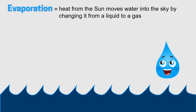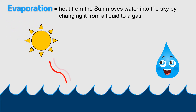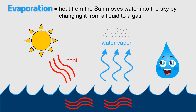First is evaporation. The sun is the real boss of the water cycle. It provides the heat or energy needed to make the water cycle work. The sun heats up the water in our rivers, lakes, and oceans, causing the water's temperature to rise. Slowly, this heat turns liquid water into a gas called water vapor, which floats up into the air. Since water vapor has no color, we can't see this process happening with our own eyes.